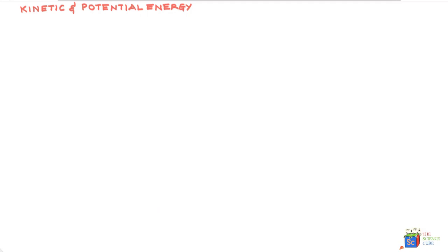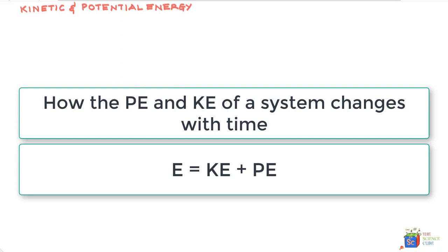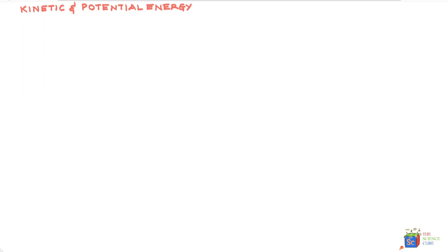Hello and welcome back to another lesson in simple harmonic motion. In this lesson you're going to learn how the potential and kinetic energy of the system changes during time period T, and if you sum up the potential and kinetic energy at various times you can also establish how the total energy of the system will change. The total energy of the system actually remains constant, which should not be surprising since the system follows the law of conservation of energy — that is, if there is no friction in the system.